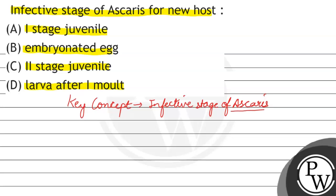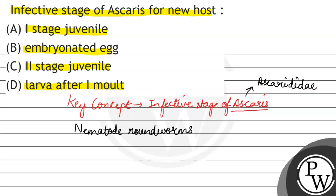Toh, pehle hum samajhte hain ki Ascaris hote kya hain? Toh, Ascaris belong karte hain to the family Ascari. And ye hote hain Nematode, Round Worms, jo ki hote hain Parasitic nature. So, Ascaris affect karte hain humans ko, and in the small intestine.